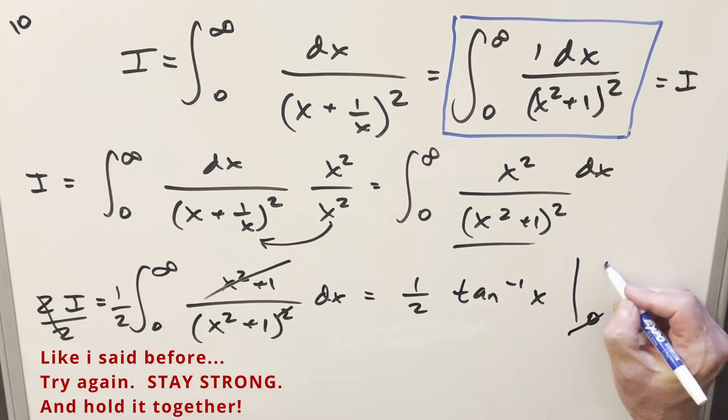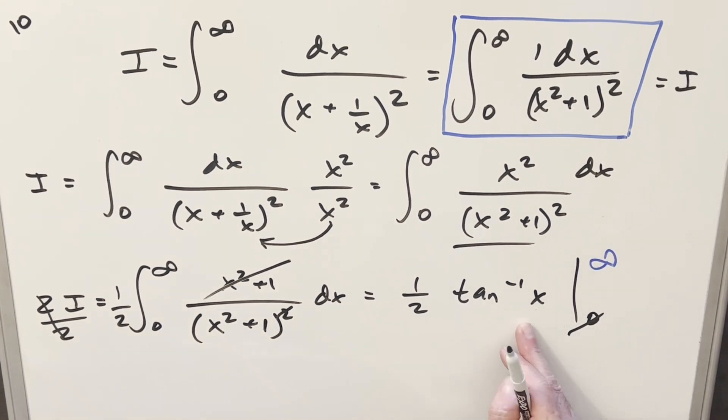Arctan at zero is just zero. Arctan at infinity, that infinity is terrible. Let's fix this. Let's get a good infinity on here. Come on. Arctan at infinity is going to be pi over two. Multiplying it together, half times pi over two. For my final solution of this, we have just pi over four.